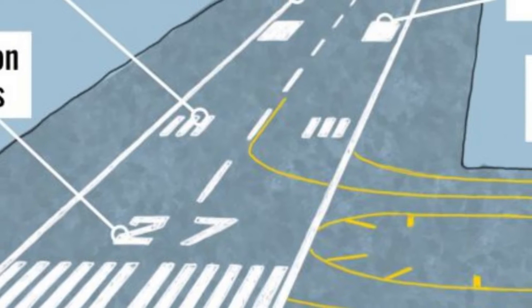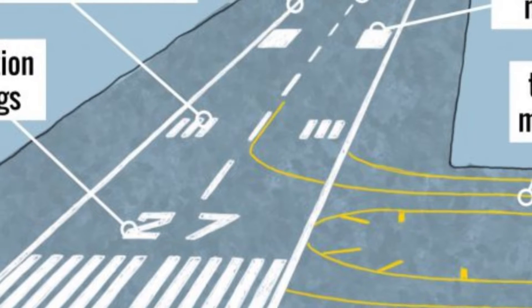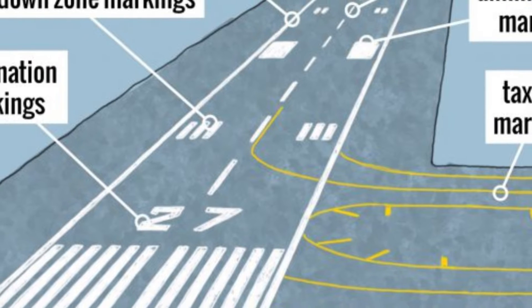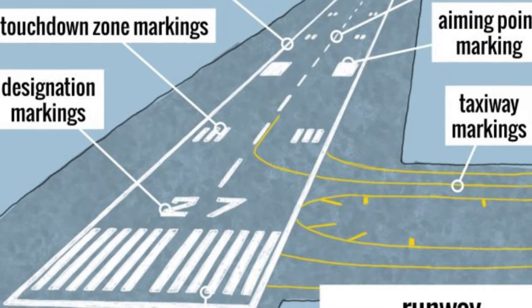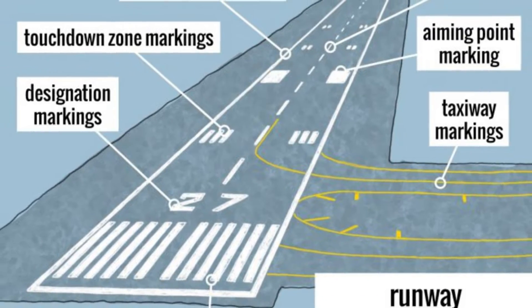In every runway you see two big numbers — sometimes with a letter and sometimes not. There are always two, sometimes with a zero, but you always see two. Those numbers represent the heading. The heading is the direction the aircraft is going relative to the north pole. If you're going north, it's zero degrees; east is 90 degrees; south is 180, and so on, until you reach north again at 360 degrees, also considered zero.